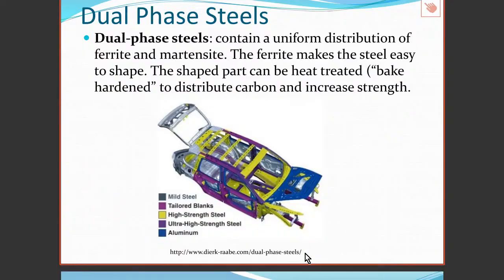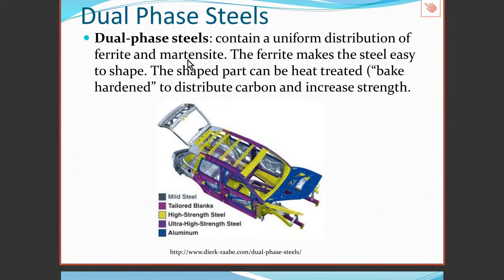We're now going to look at some specialty steels used in cars. So far we've looked at steels that are essentially single phase, but there are interesting steels called dual phase steels where we deliberately want to create a mixture of phases not normally seen in typical steels. One type consists of a distribution of ferrite and martensite. Because the ferrite is soft, the material overall is very easy to shape — useful when making car body panels. The components shown in green have been made using dual phase steel.